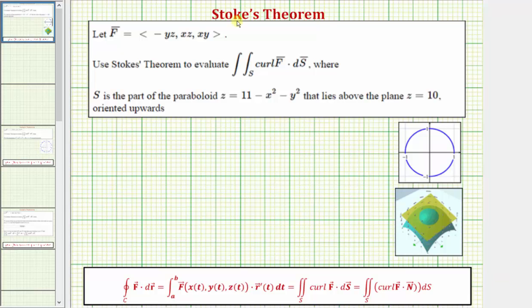Welcome to an example on how to apply Stokes' Theorem to evaluate a surface integral. We're given the vector field f, and we're asked to use Stokes' Theorem to evaluate the double integral over the surface s of the curl of f dot differential s, which is often also expressed in an equivalent form.